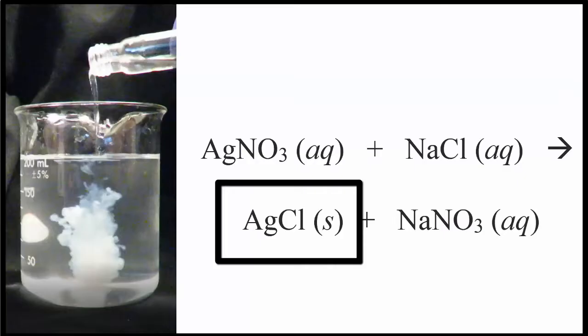The AgCl, the precipitate, silver chloride, is at the bottom. It's a solid. If we poured the liquid off, let it dry out a little bit, that would look like this.